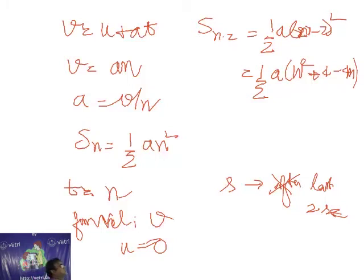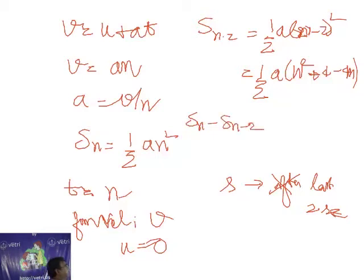The distance covered in the last two seconds is s_n minus s_{n-2}. This gives half a n squared minus half a times (n squared minus 4n plus 4). The half a n squared terms cancel out.